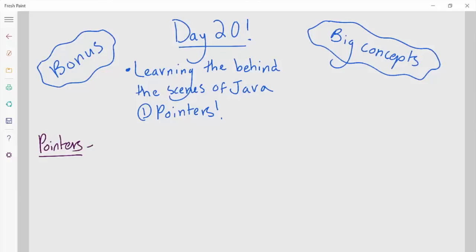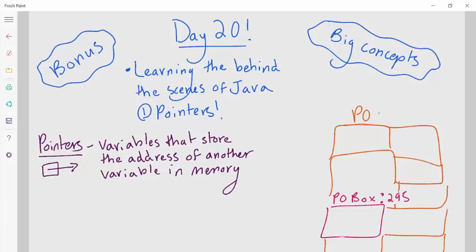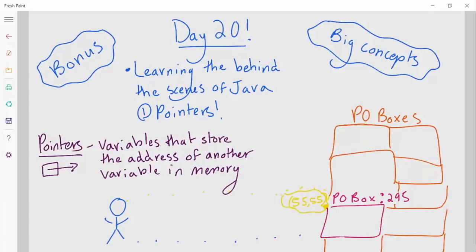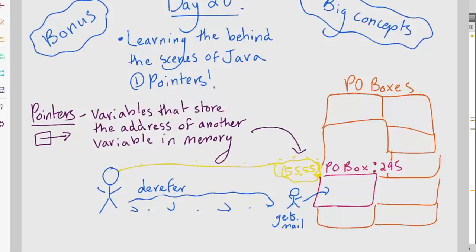So what are pointers? They are variables that store the address of another variable in memory — in other words, they point literally to memory locations. Let's take this into the real world: pretend you have a P.O. box, number 295. You can get to this mailbox, and say it's at location 5555 with longitude and latitude. That remembered location — the fact that you know it's at 5555 — that's like a pointer. But you can't get your mail until you walk over to that location. The value of a pointer is the location of another value stored somewhere in memory. To get the actual value stored in memory — like the amount of mail you have — we have to do something called dereferencing the pointer. Luckily, Java does all of this work for us.